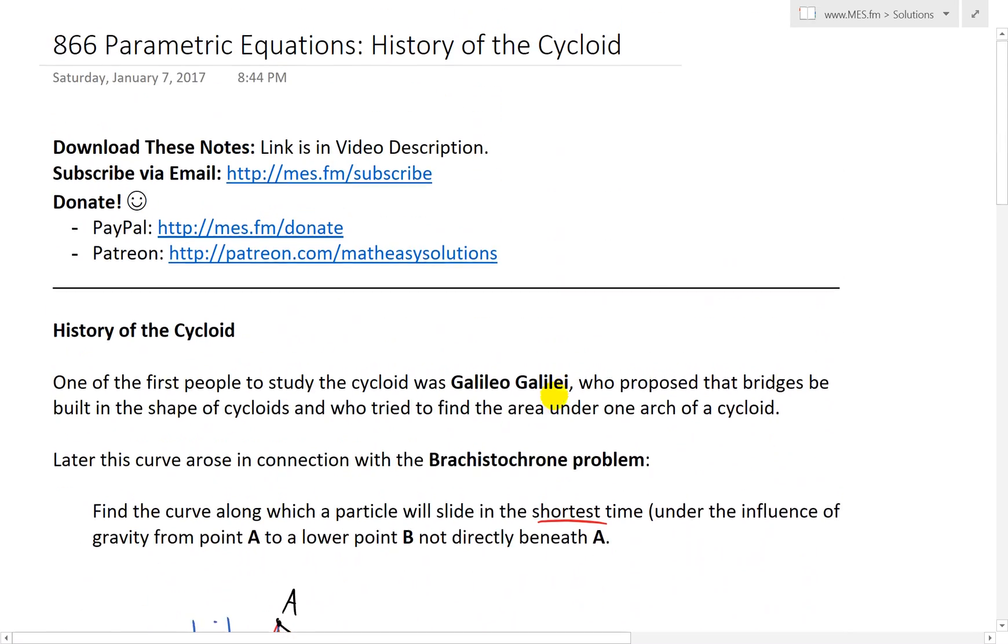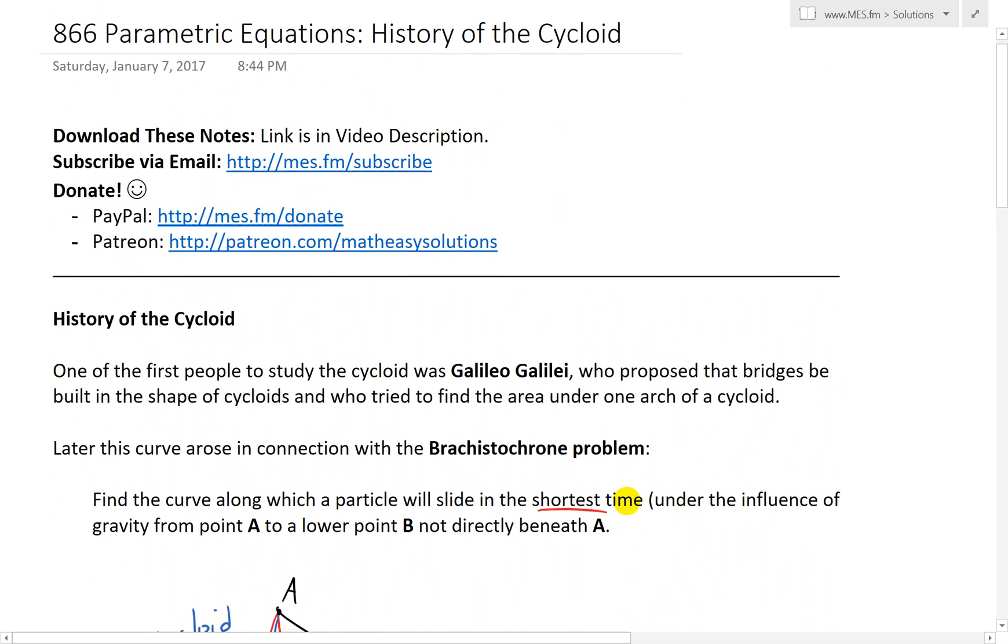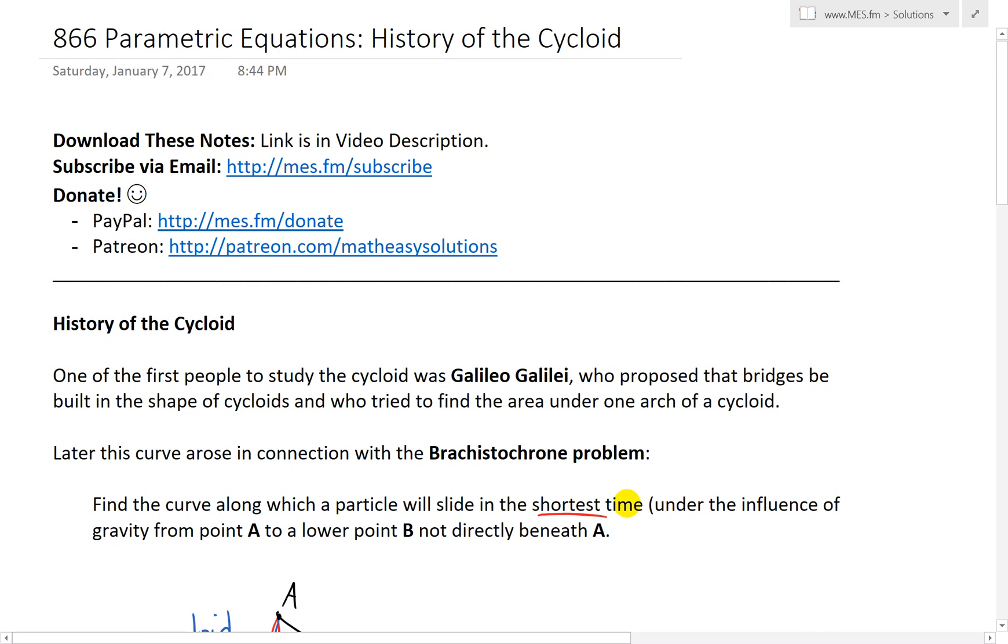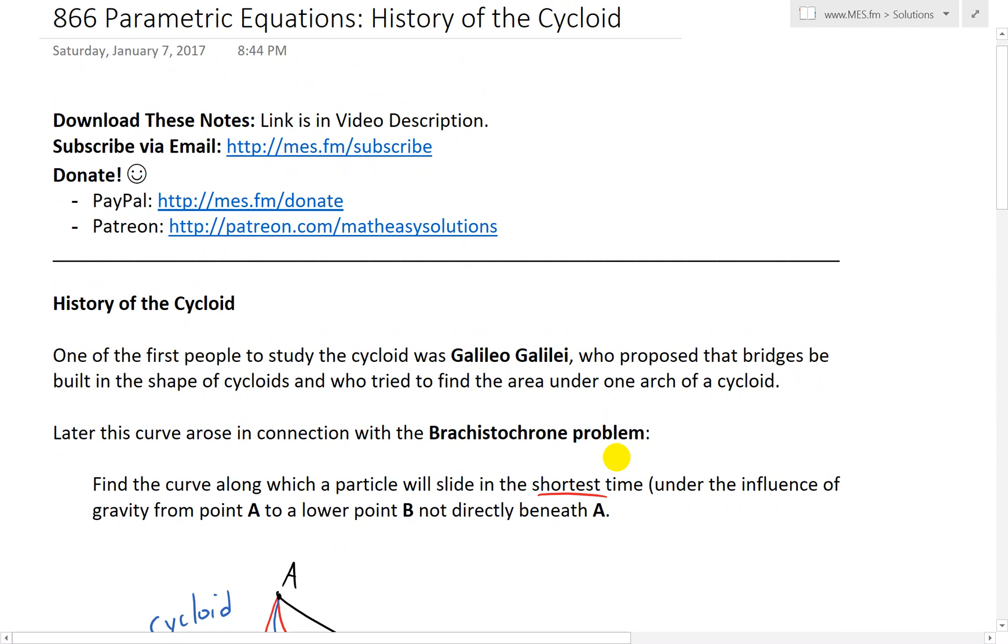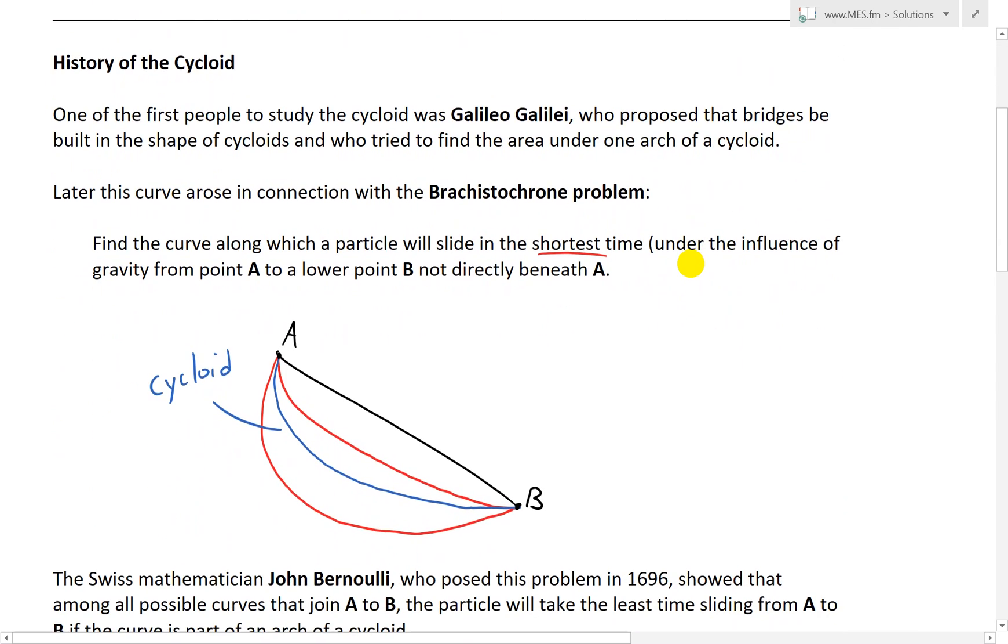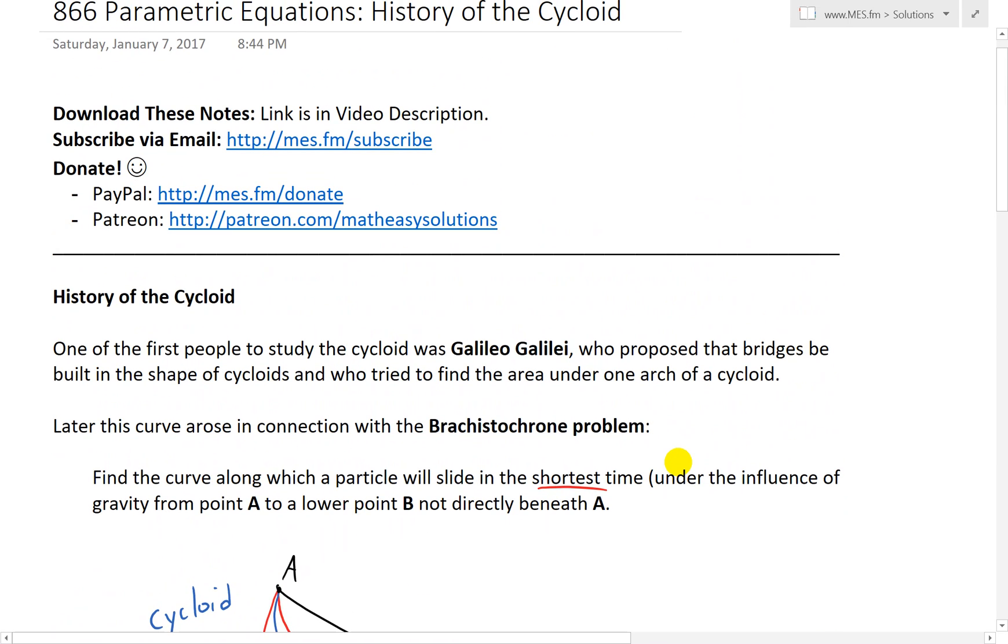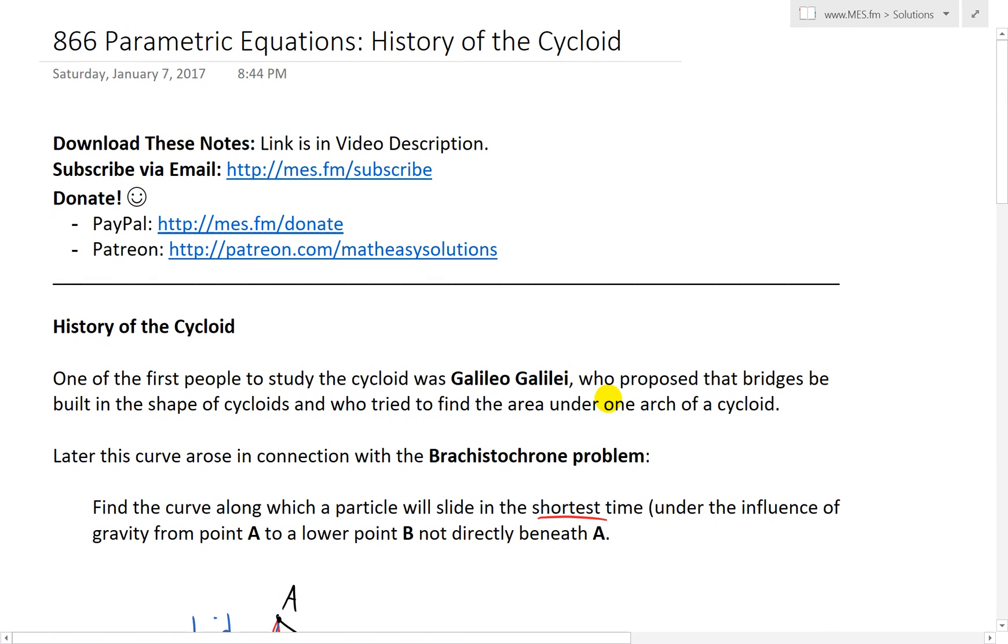Again, I believe this is all due to the nature that it's defined based on a rolling circle. So basically, if you were to find out how fast something rolls down or the shortest time it rolls down a curve, you would try to replicate how the nature of the rolling, a ball or particle, for example. Anyways, that's all for today. If you learned, like always, you can download these exact notes in the link below. And thanks for watching and stay tuned for another Math Easy Solution.